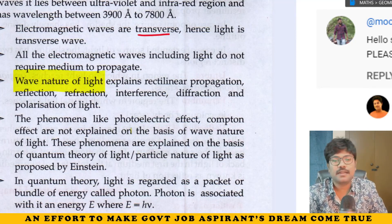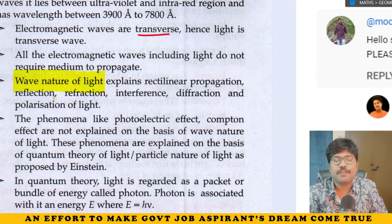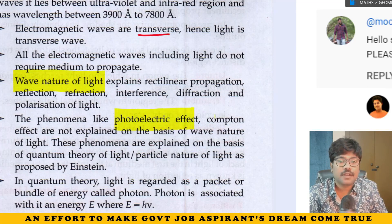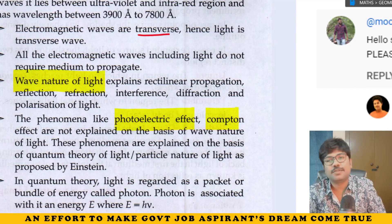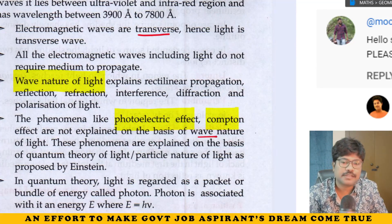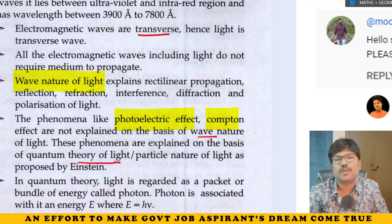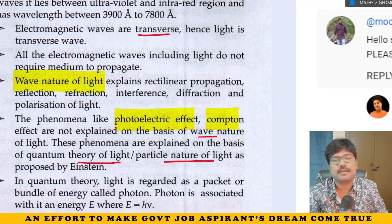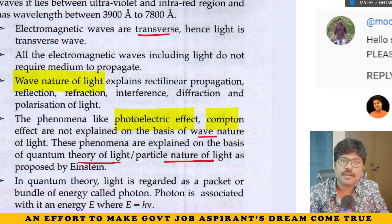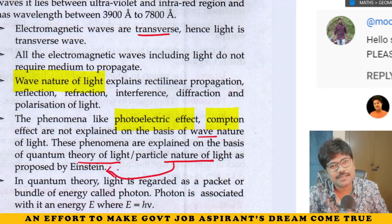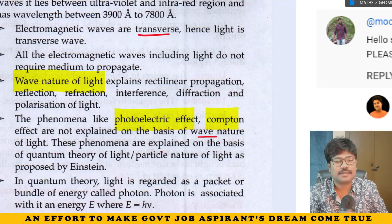Next, particle nature of light. Particle nature explains the photoelectric effect and the Compton effect. These two phenomena are explained on the basis of the quantum theory of light — particle nature. The quantum theory and particle nature of light were proposed by the world-famous Einstein. These are the two natures of light.